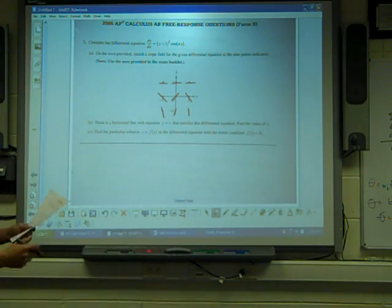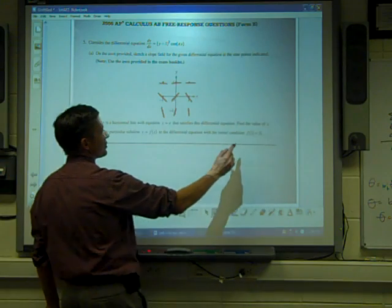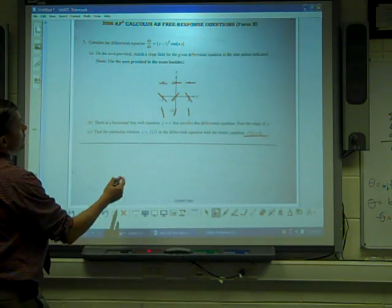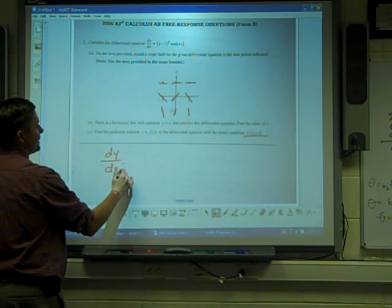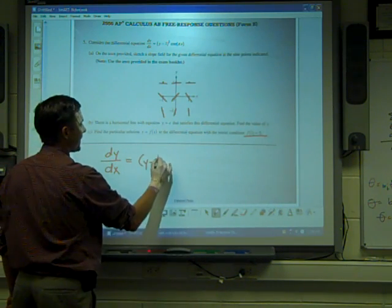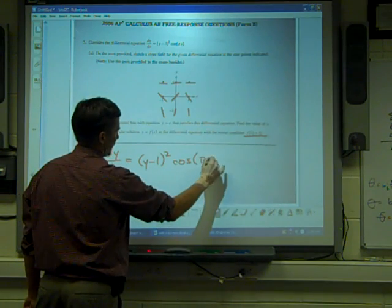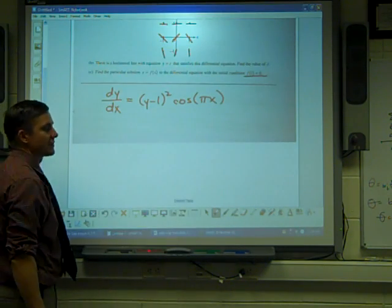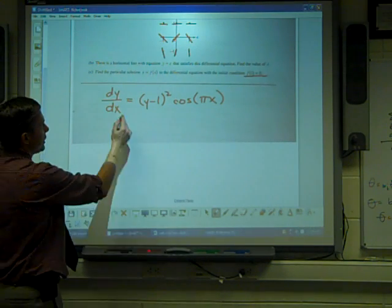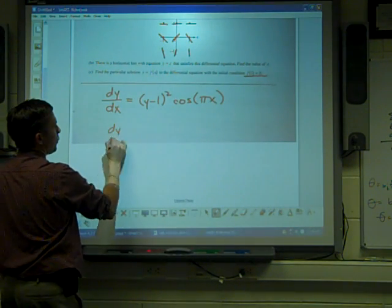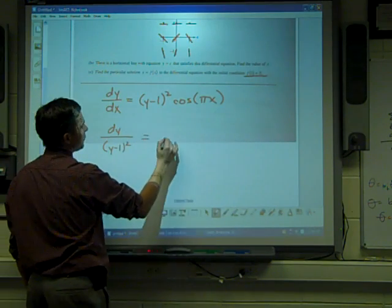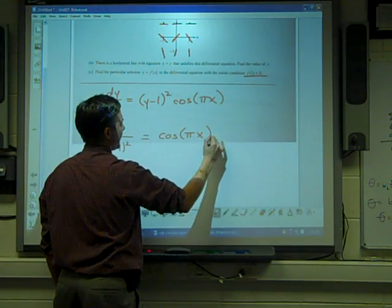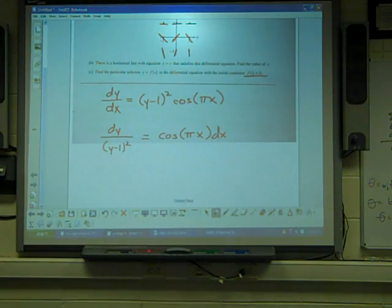So, letter C. Find the particular solution y equals f(x) to the differential equation for the initial condition f(1) equals 0. Here we go. This is what we talked about. When you have dy/dx and you look on the left side and you have two variables, x and y, you cannot integrate. You have to separate first. And I guarantee this will be six points. And I know the first point will be that you separate these. So, I'll bring dx over and divide by (y-1)². So, I get dy/(y-1)² equals cosine(πx)dx. That's the separation of variables.